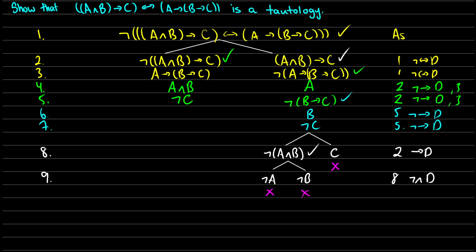Our right side is now completely done. We can now focus on the left side. We have line 10 here — because we have 'a and b' and not-c, let's break 'a and b' into components. We're going to be left with a and b. This comes from line 4, and-decomposition.